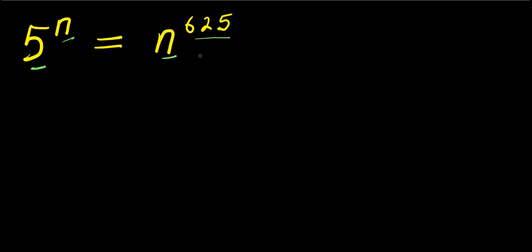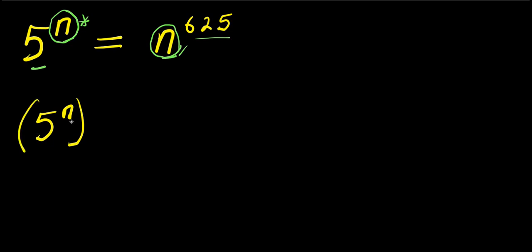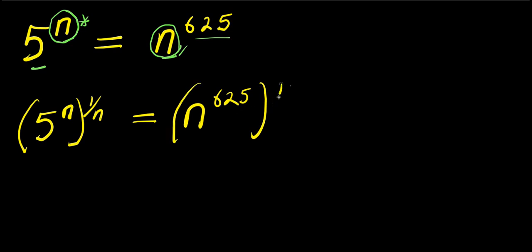What we are going to do first is eliminate this n here, because we have n here and also another n here. So let's eliminate this n and push it over here. That means we need to multiply this exponent by 1 over n. I have 5 power n raised to the power 1 over n, and I need to do the same thing on the right side: n power 6/5, raised to the power 1 over n.